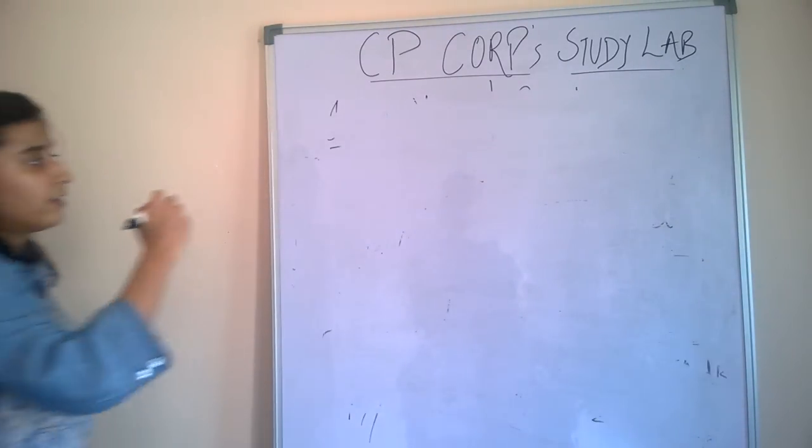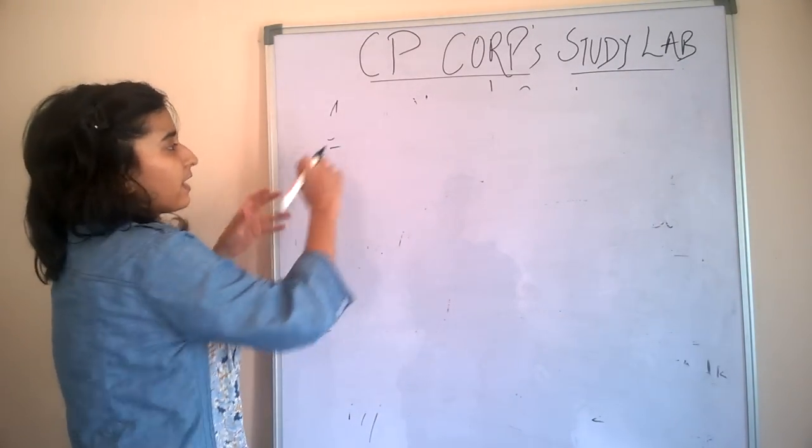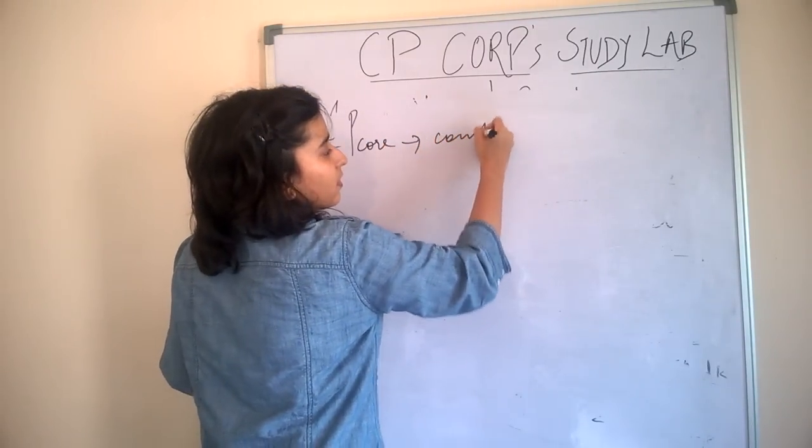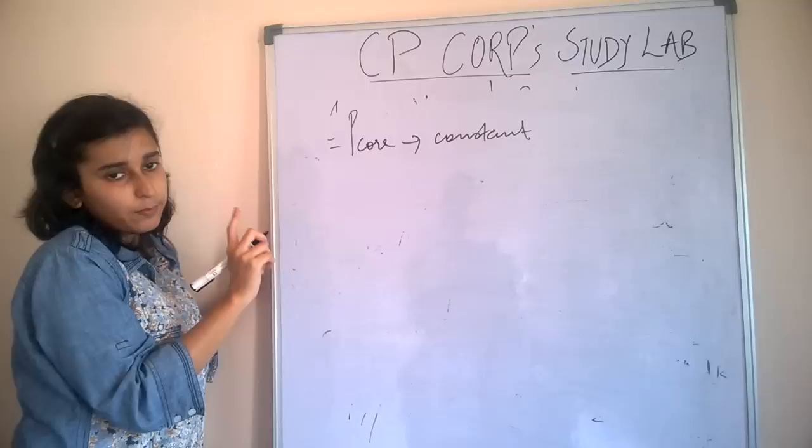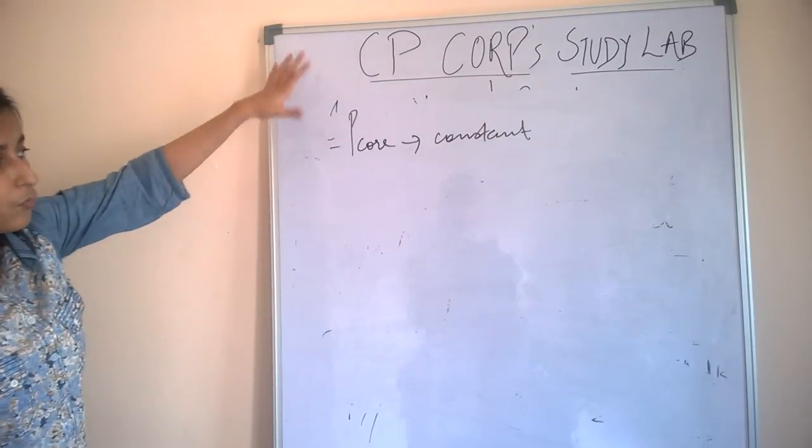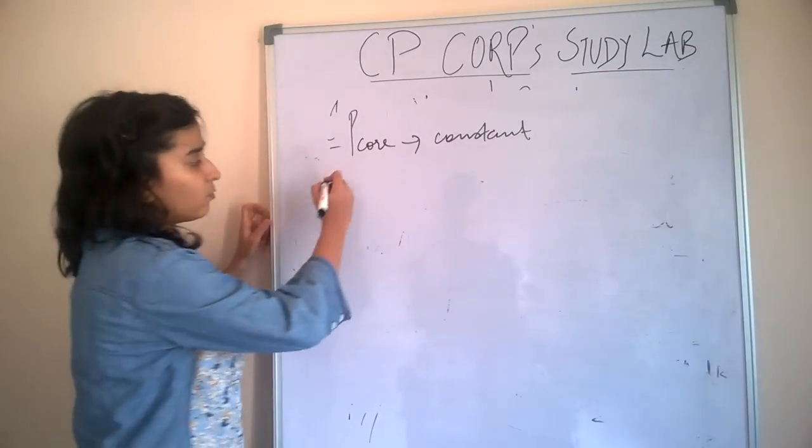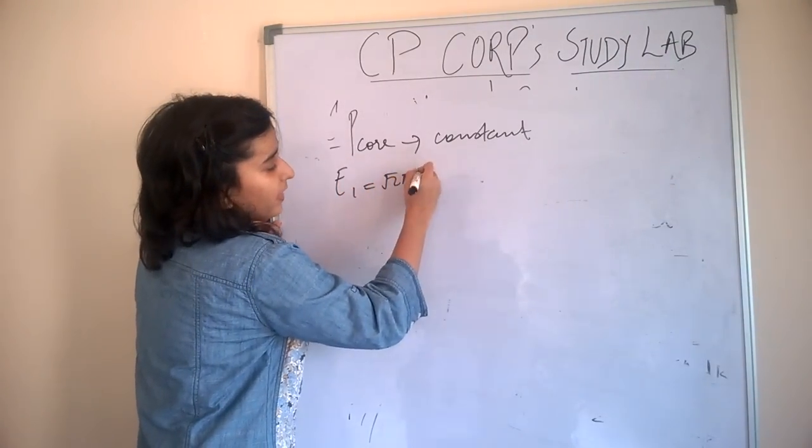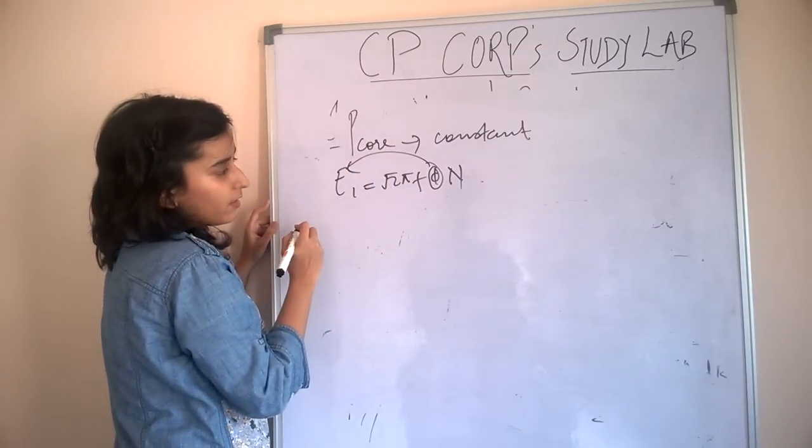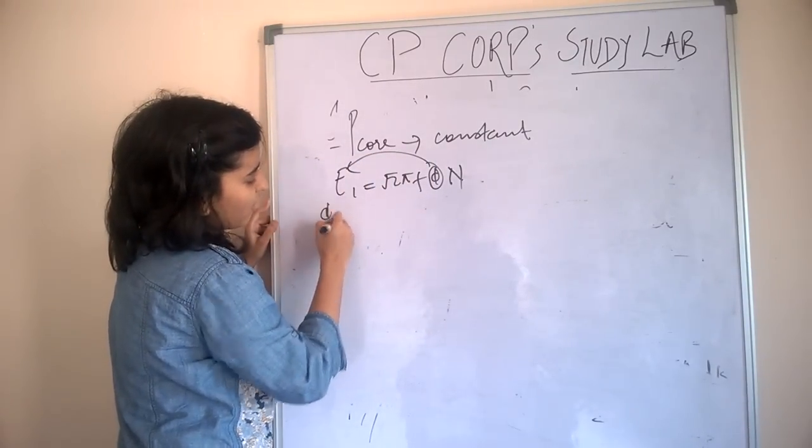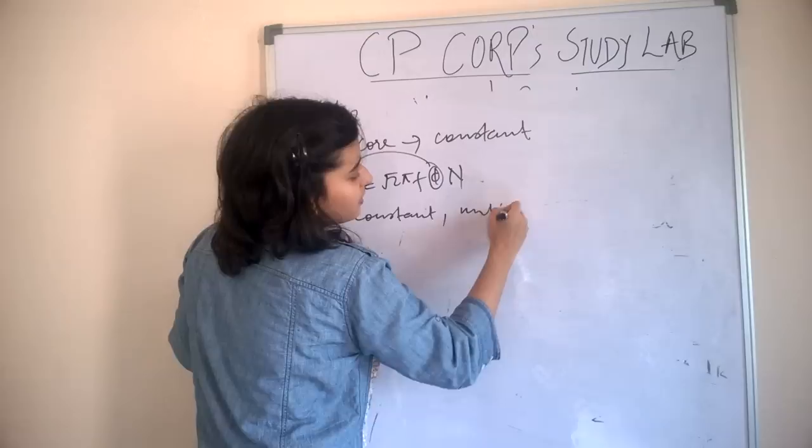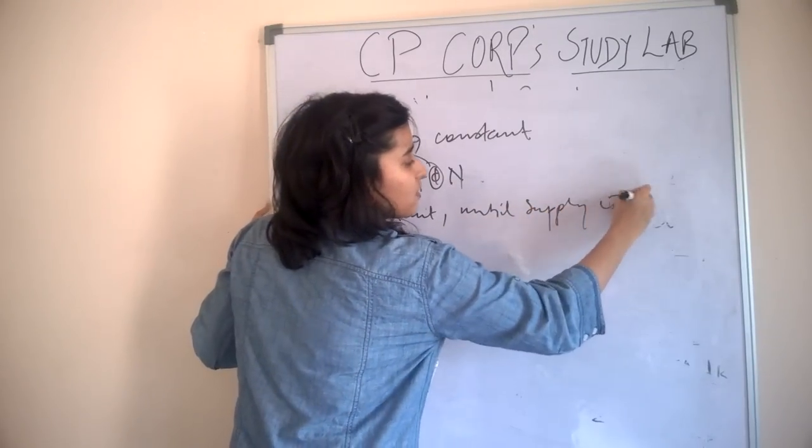And there is one more important thing for GATE: core losses always remain constant. It is independent of load. In practical transformers there is slight variation in core losses, but we assume core losses to be constant. Since induced EMF is √2 π f Phi_m, this phi depends only on E, means phi is constant until supply is constant.